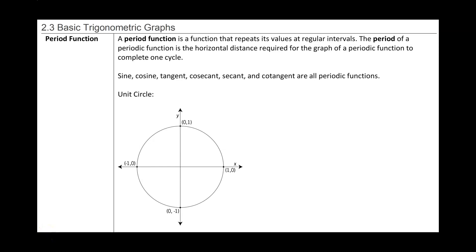In this section, we are going to talk about the basic trigonometry graphs, which are sine, cosine, tangent, cosecant, secant, and cotangent.